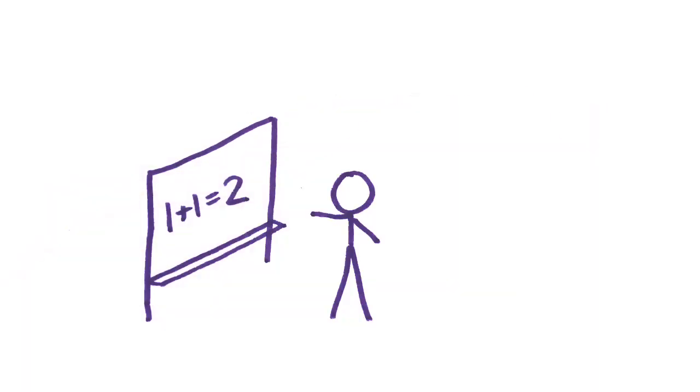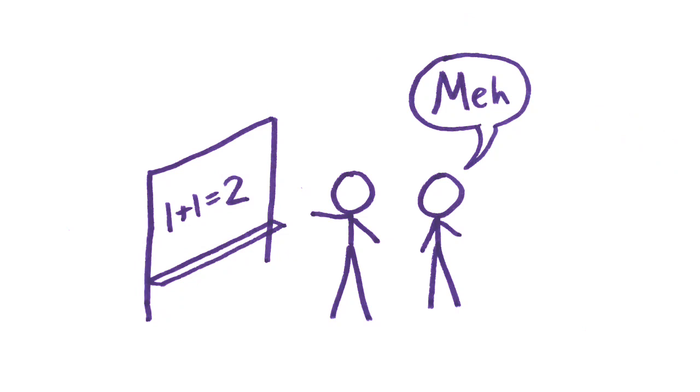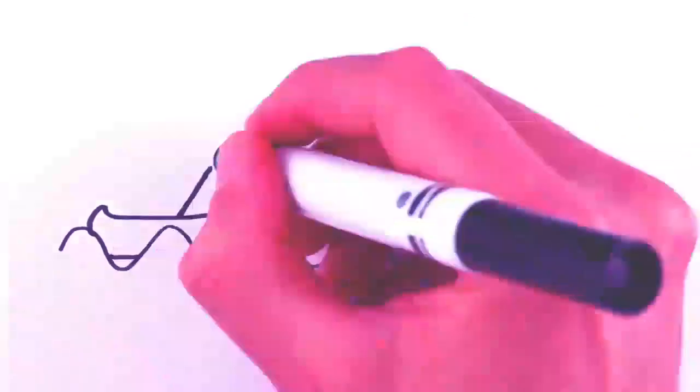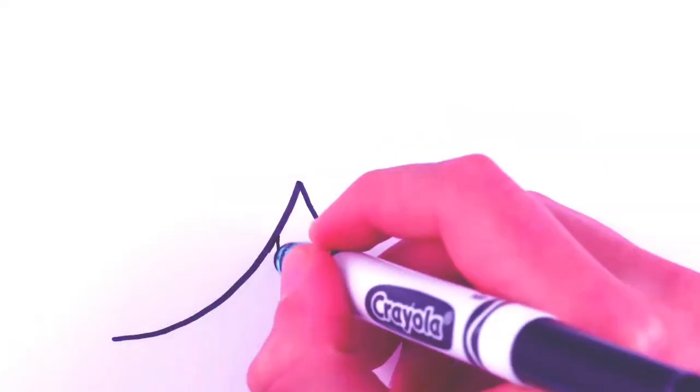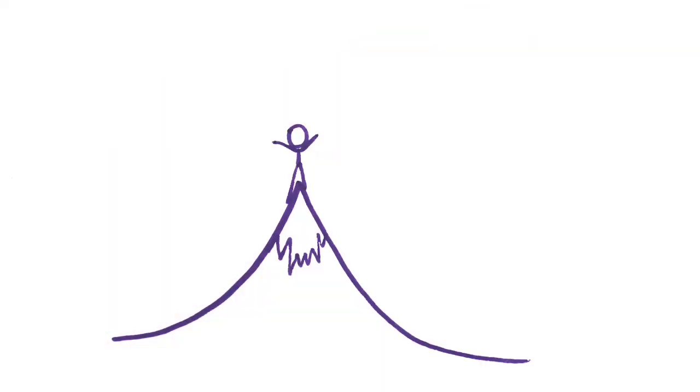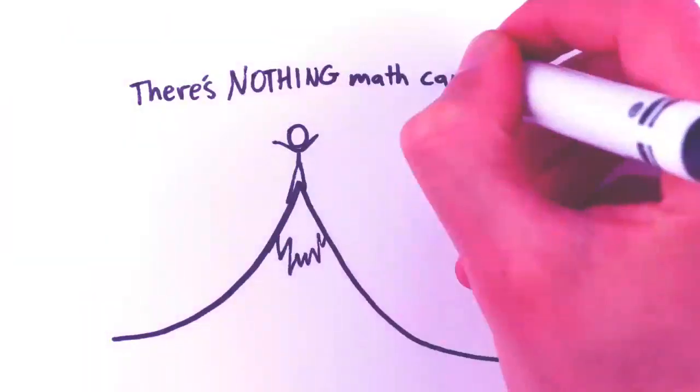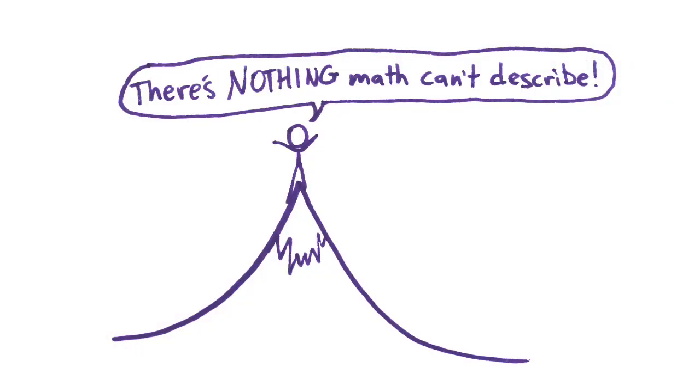Some think it means nothing profound or that math is simply something we've made up to be useful. Others think it means that there is something fundamentally mathematical about nature, and the most extreme possibility is that our universe is completely mathematical in the sense that it has no properties except mathematical properties.